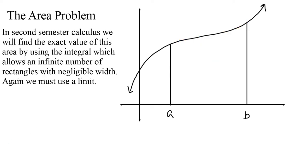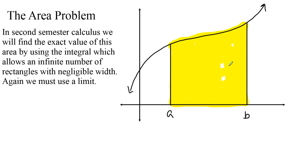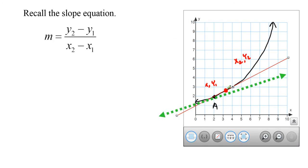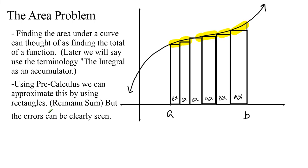In calculus, we are actually going to be able to figure out the entire area exactly under the curve. We're going to let these delta x values shrink to almost nothing. The more rectangles we have, the smaller each individual one. We're going to let delta x shrink to zero and have an infinite number of rectangles — I know that's a bit odd, but that's the way to think about it.